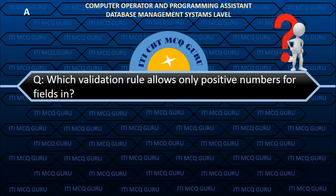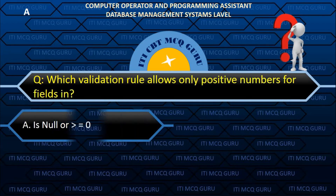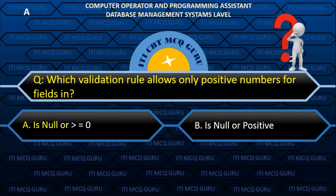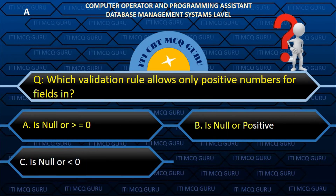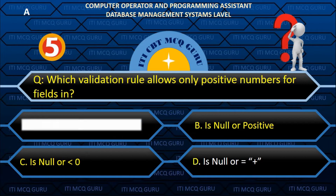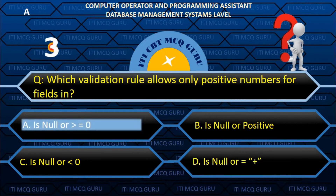Which validation rule allows only positive numbers for fields in Access? A. Is Null Or >= 0.